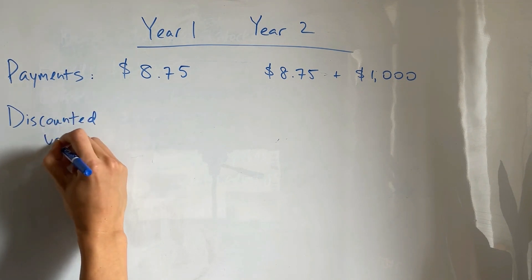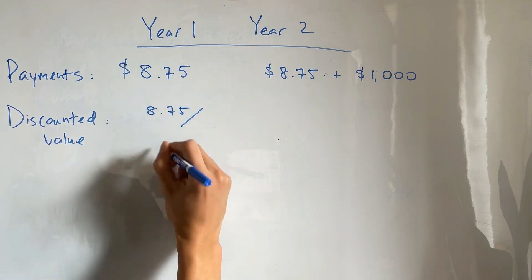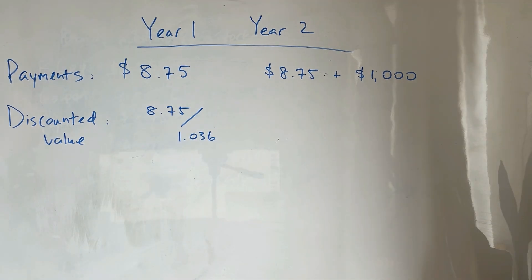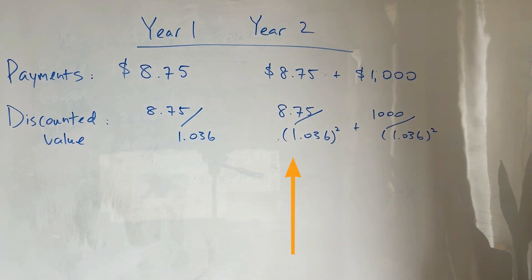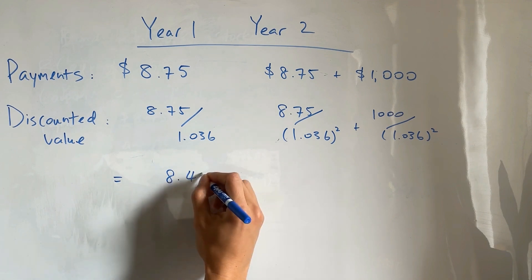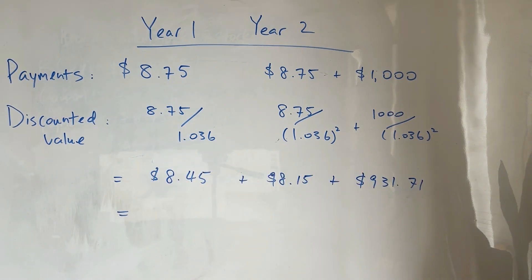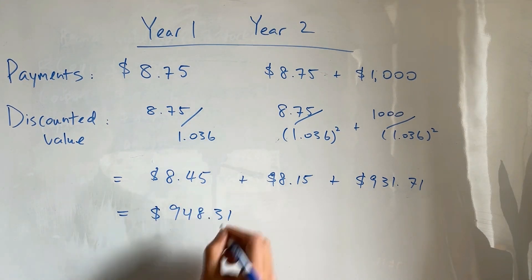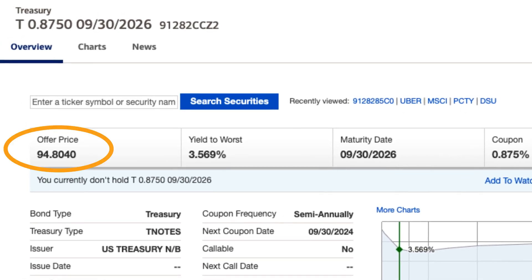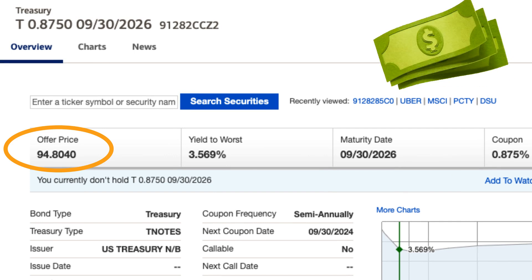We have $8.75 for the first year — we discount that by 3.6%, meaning we divide it by one plus 3.6%. For the second year, we're also getting $8.75, discounted by 3.6% twice, so we divide by (1 + 0.036) squared. Then the $1,000 received at the end of year two is also discounted by (1 + 0.036) to the power of two. When we add all three payments together, discounted to present value, we get a value of about $948 per $1,000 bond, or about 94.83 per 100. If we look at the price of a two-year note right now, it's about 94.8 — the price matches the value of the cash flows for that bond.